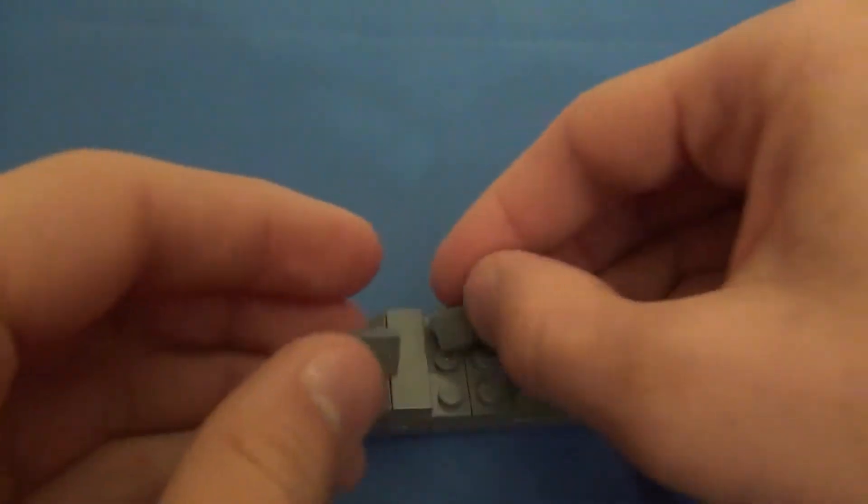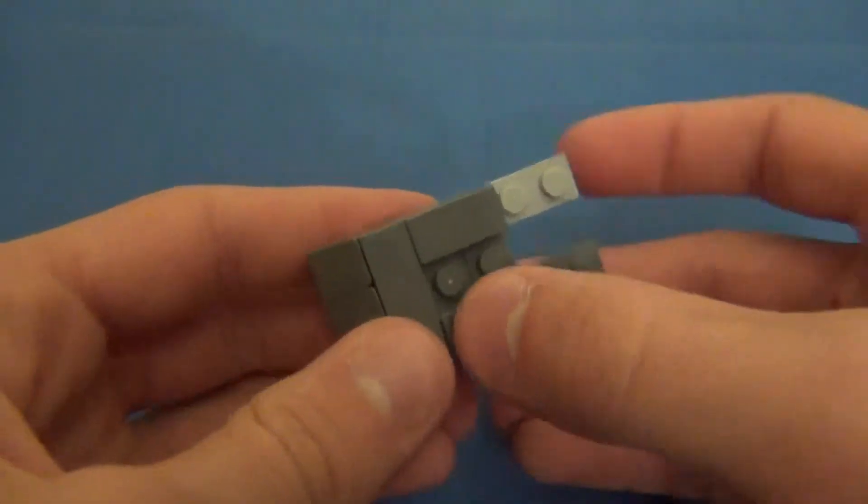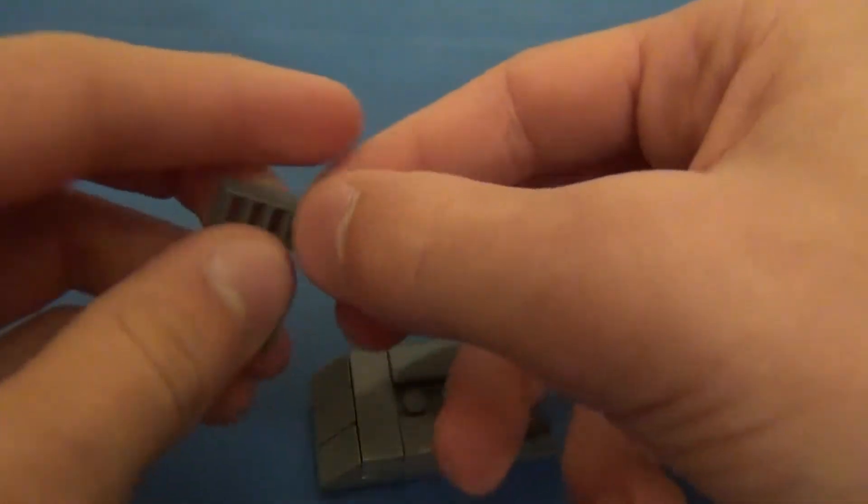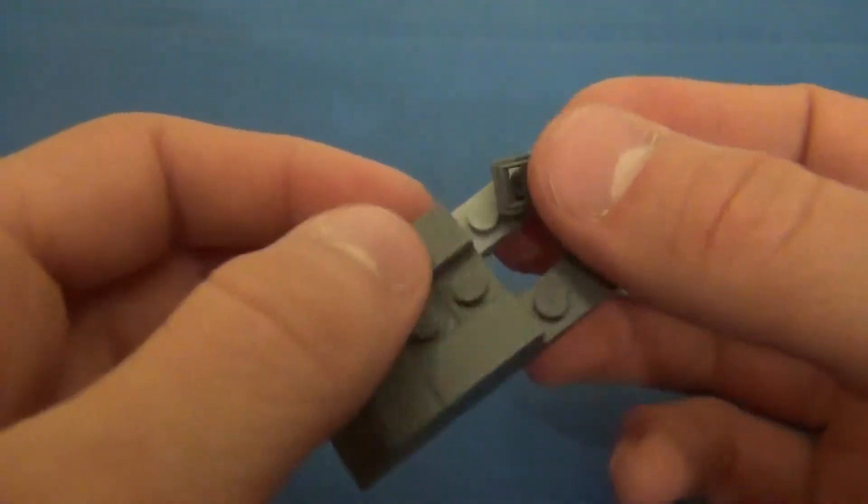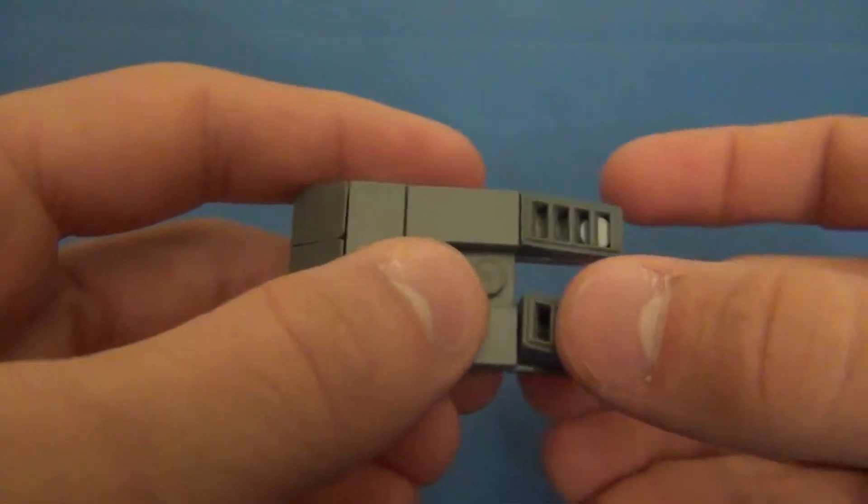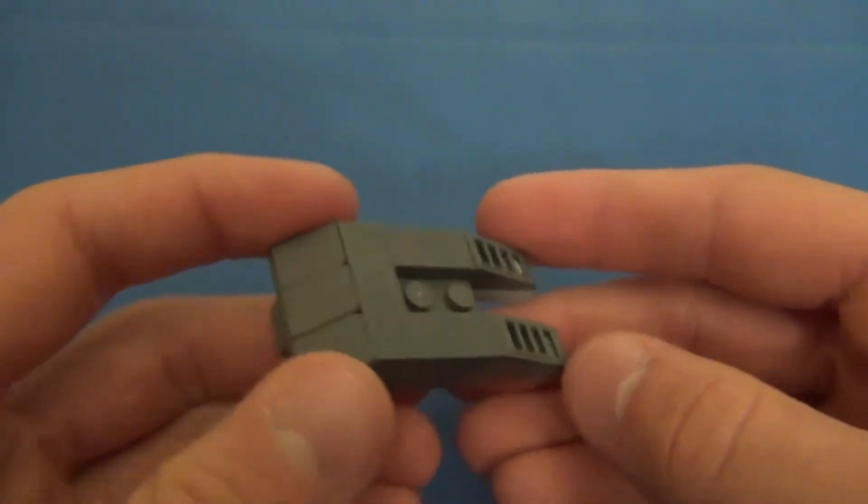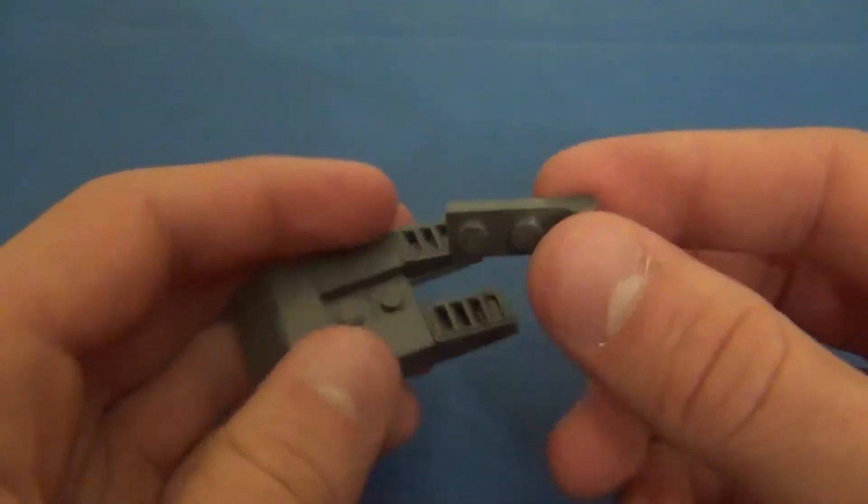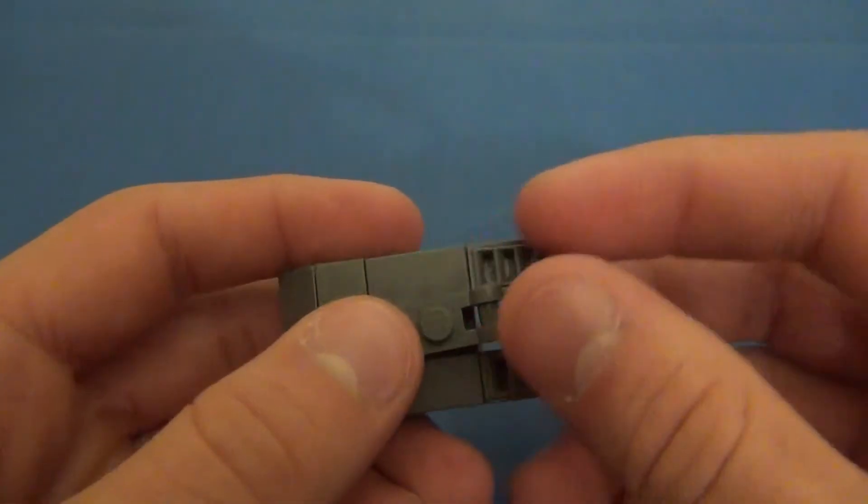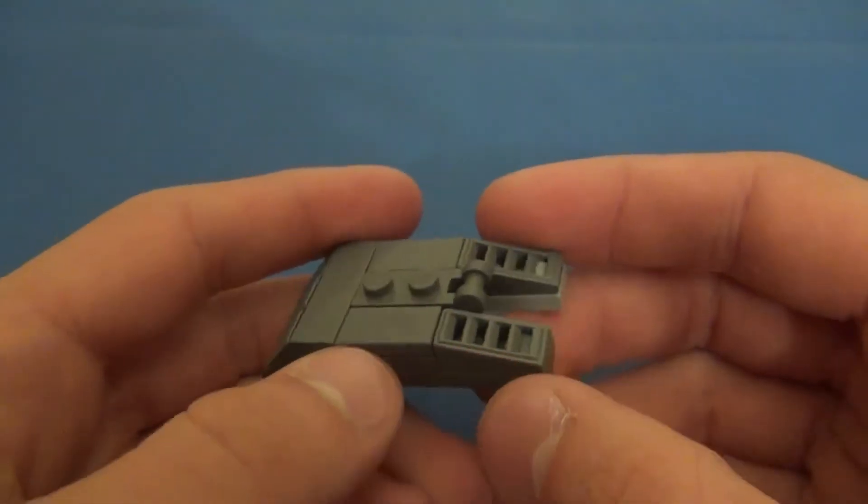Take two 1x2 tiles and put them on either side like that. Then you'll take these two lengthwise slopes and put them like that, then you'll take one of these 1x2 plates with the clip and put it there so it looks like that.